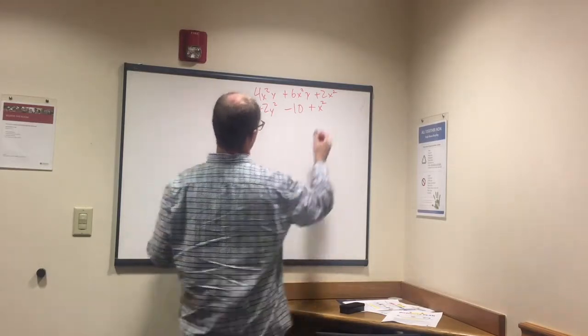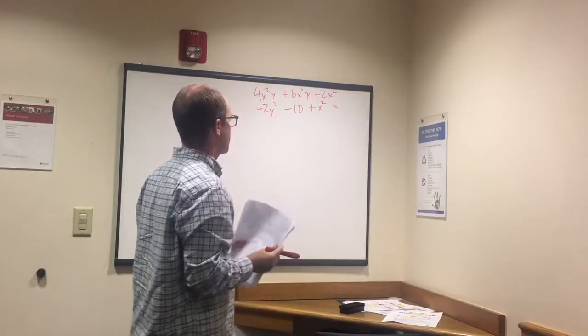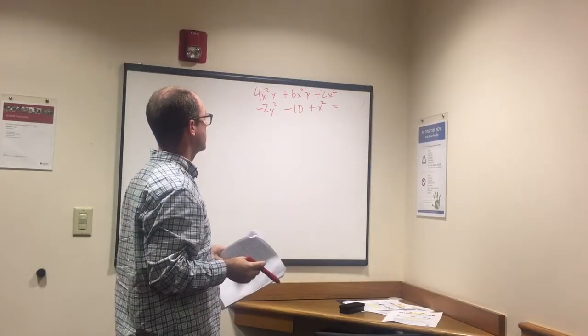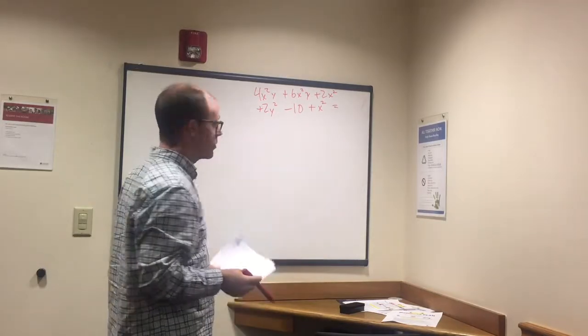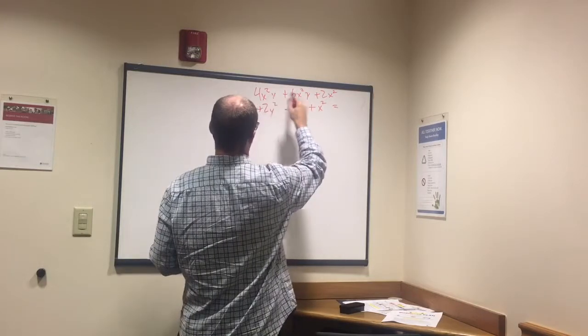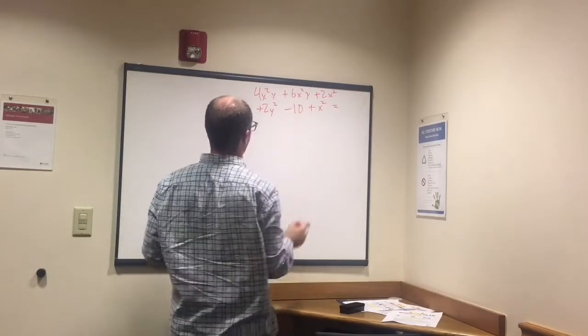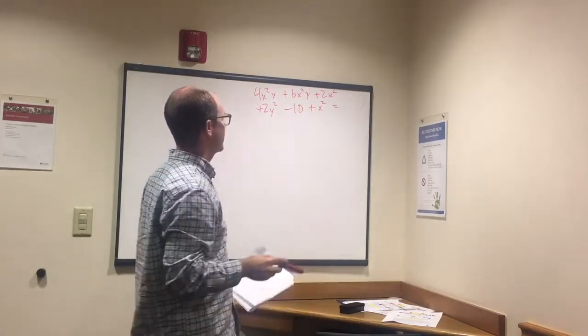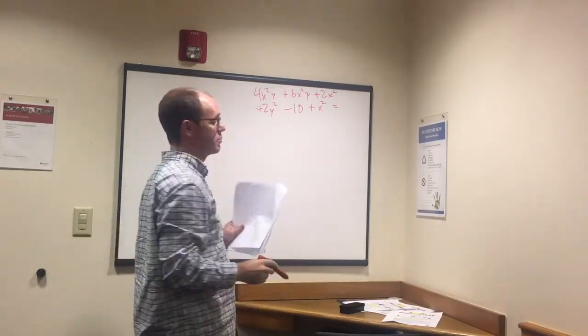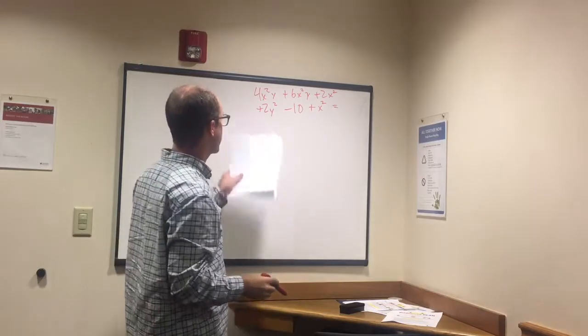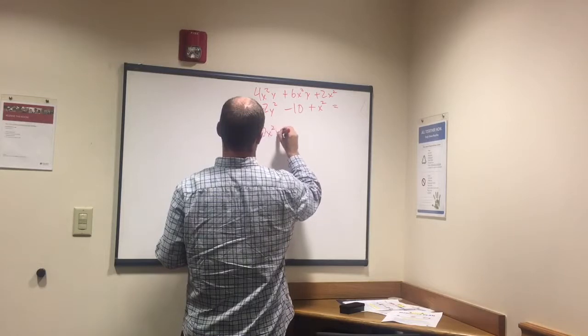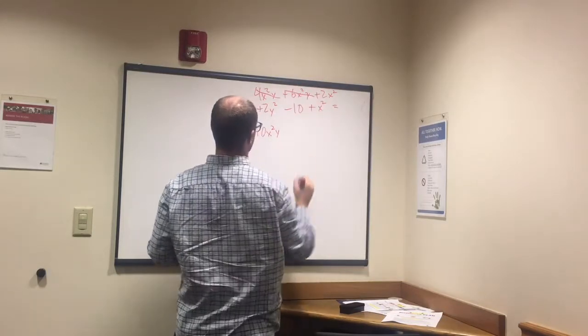We do the same thing, we're trying to combine like terms. We start off with 4x squared y and the very next one is plus 6x squared y, so we can combine these because we have x squared y in both of them. We don't have anything else that has the x squared y. Four plus 6 is 10, so we got 10x squared y.